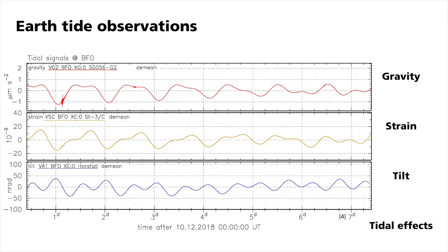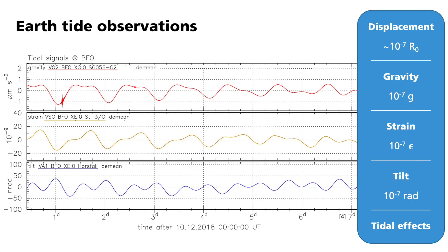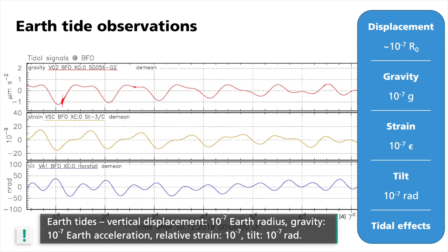The diagram shows a comparison of the three signals: the earth's tides measured by a gravimeter, a strain meter and a tilt meter. As seen before, periods of approximately 24 hours and 12 hours dominate the signal. It is important to note that the signals do not have their extrema at the same time, which is due to the superposition of the various lunar and solar tides, which are different for different measurements. The order of magnitude of the amplitude of these tidal observations is always 10 to the power of minus 7: vertical surface displacement relative to the earth's radius r0, gravity with respect to gravitational acceleration g, relative strain epsilon, and tilt in radians.